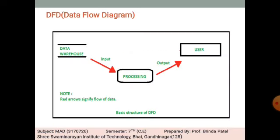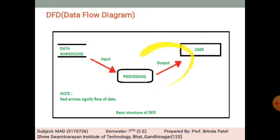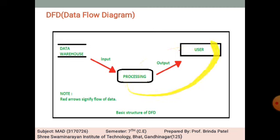As we can see in this figure, data flows from the data warehouse — that is, input goes for processing. Processing is shown in the rectangular symbol, and the arrow represents the flow of data, so after processing, the result is received by the user.